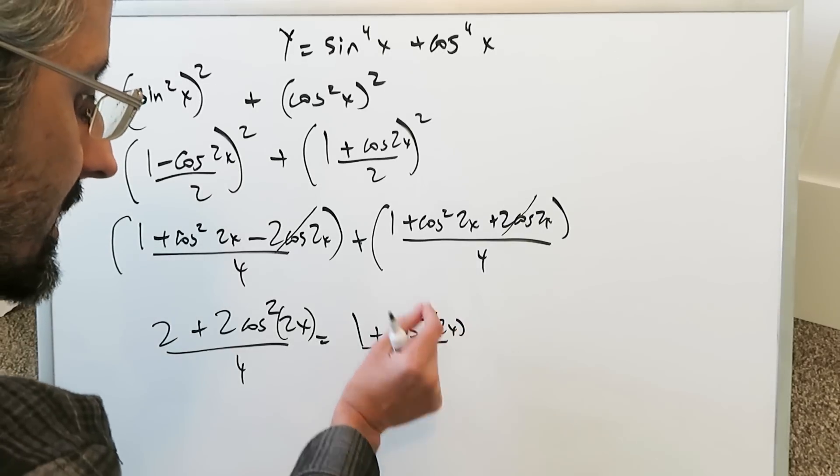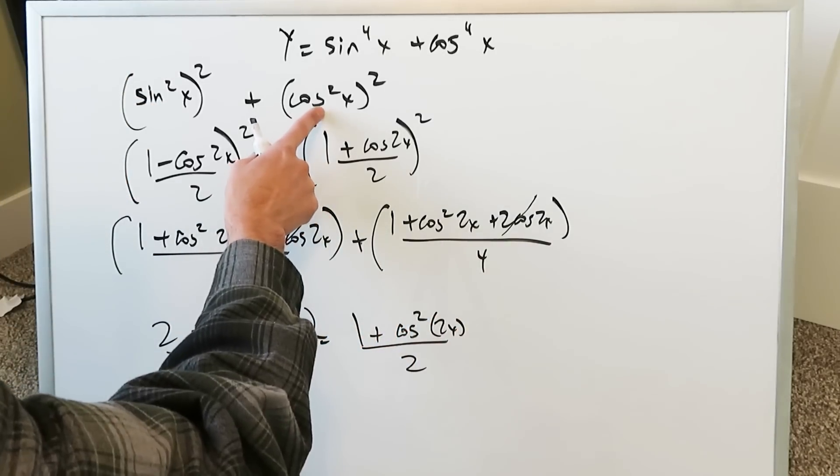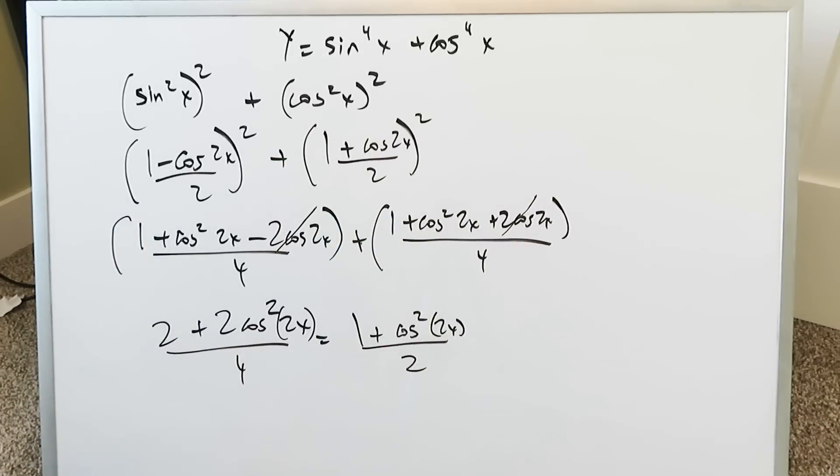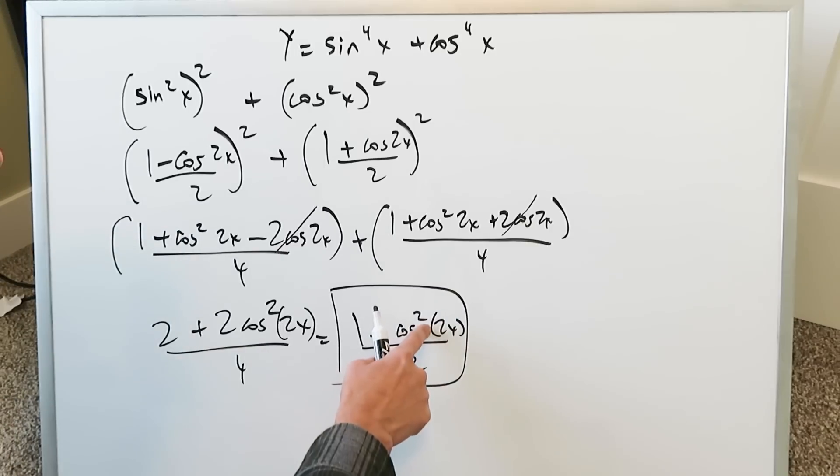Now you gotta remember you have an item here to the exponent 2 which looks very much something like that in terms of an item which can be hit by the power reducing formula and we can do that. When I'm looking at just this part alone I can do the power reducing right here on the cosine square component.